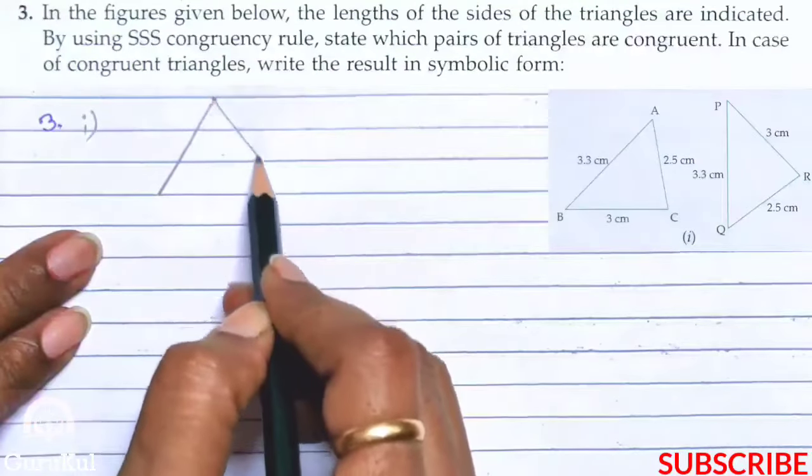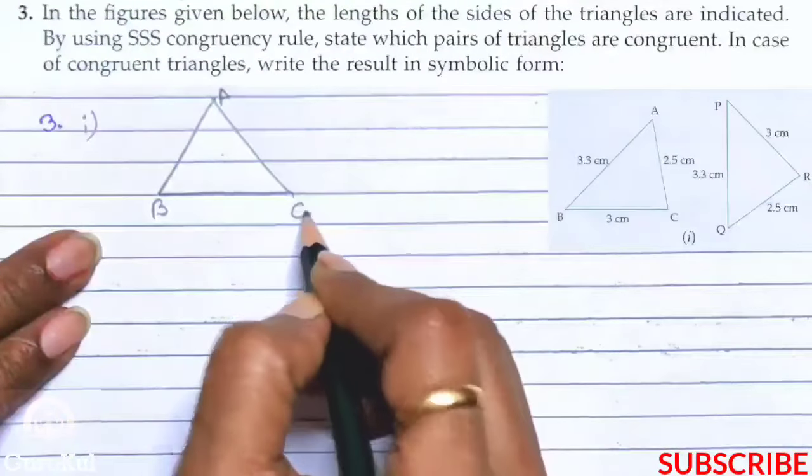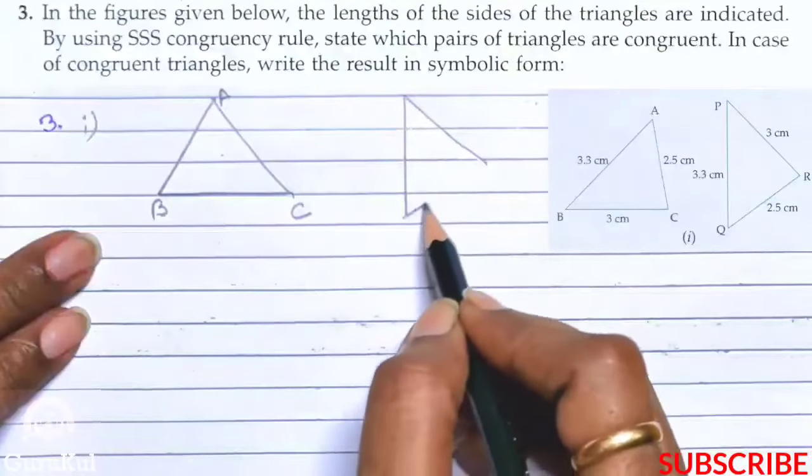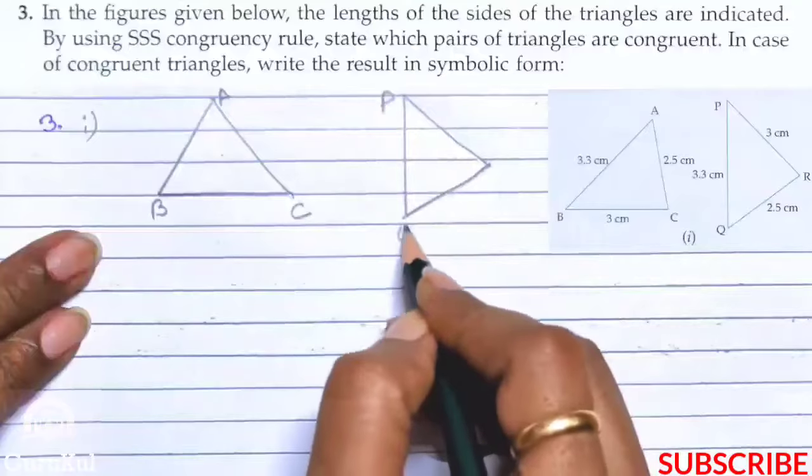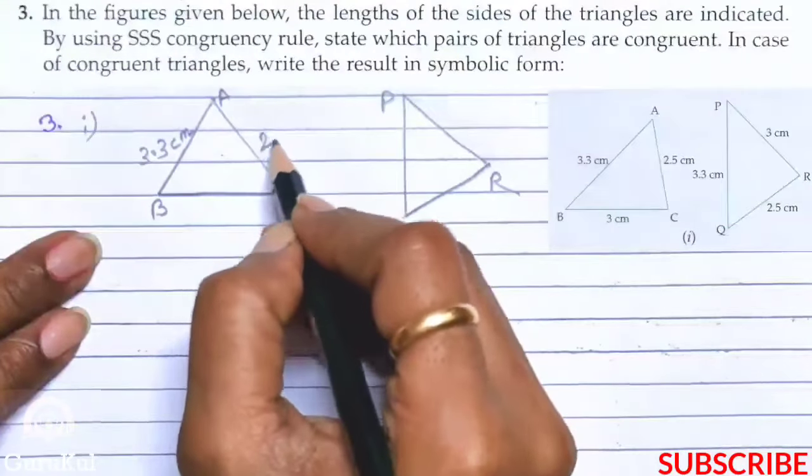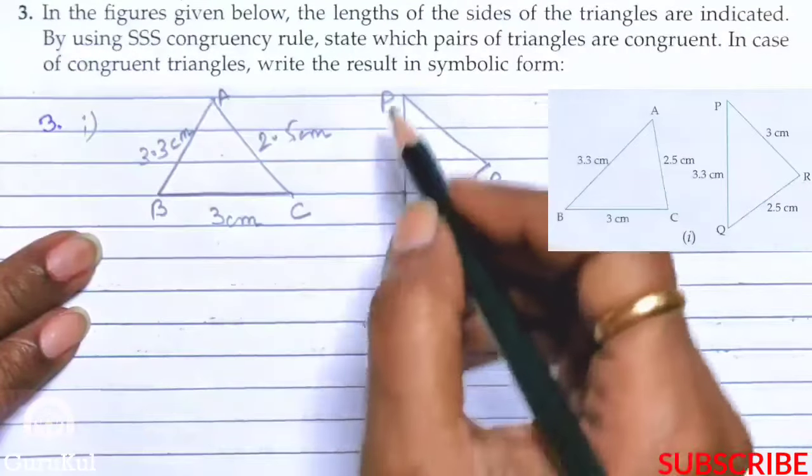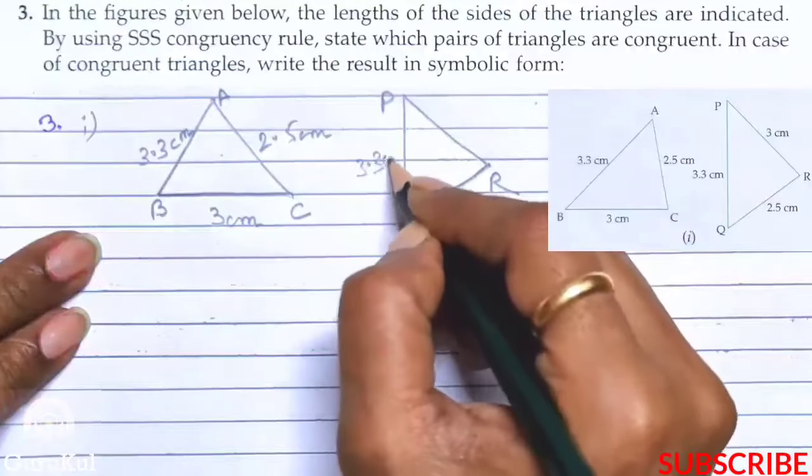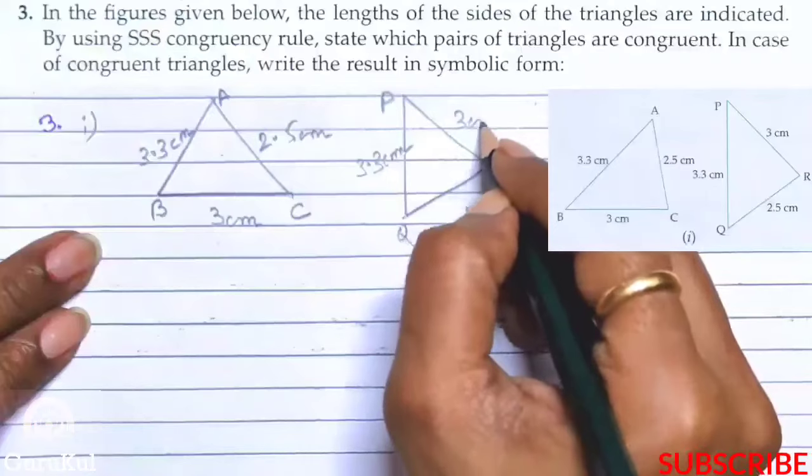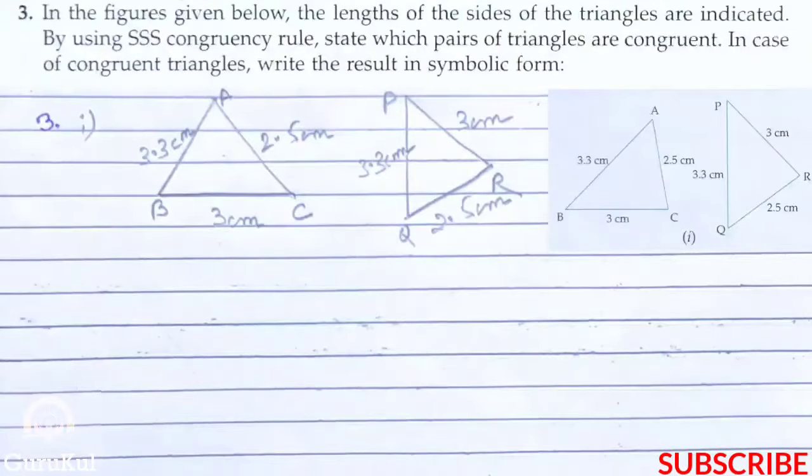We draw the diagram. Here two triangles are given, A, B, C and P, Q, R. AB is 3.3 cm, AC is 2.5 cm, and BC is 3 cm. Here PQ is 3.3 cm, PR is 3 cm, and QR is 2.5 cm. Now we have to tell whether these two triangles are congruent or not. So let's start.